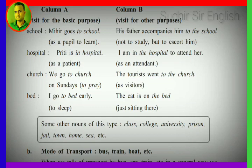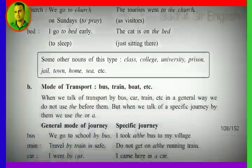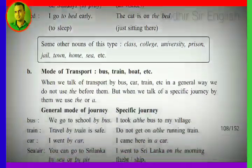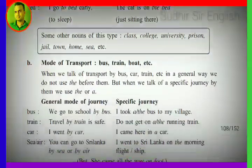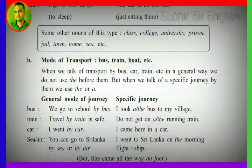Some other nouns of this type — where no article is used for basic purpose — include: class, college, university, prison, jail, town, home, sea, etc.